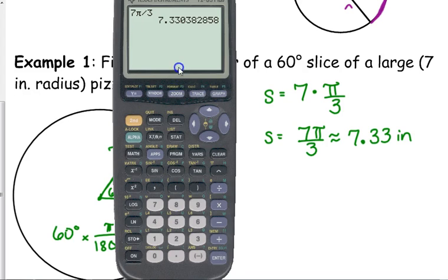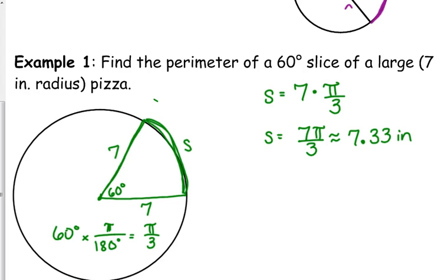But that's just the length of the crust. We wanted the perimeter of the entire pizza or slice of pizza, so it had two sides that were 7 apiece, so that's 14. So, the perimeter of this pizza, or the slice of pizza, is approximately 21.33 inches. Why did I add 14? Because 7.33 is just the crust. I want the perimeter of the entire slice, so the two sides are the radius.